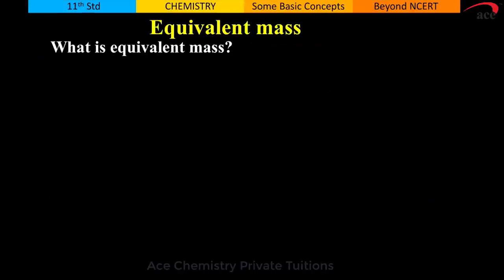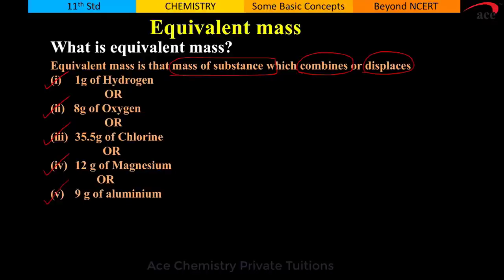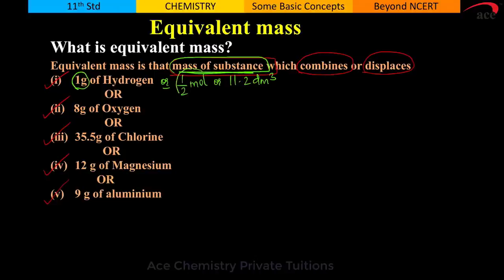Equivalent mass is a special mass related to atomic mass and molecular mass. It is that mass of a substance which combines or displaces 1 gram of hydrogen, or 8 gram of oxygen, or 35.5 gram of chlorine, or 12 gram of magnesium, or 9 gram of aluminum. For example, 1 gram of hydrogen can also be written as half a mole of hydrogen, or 11.2 dm³ of hydrogen.